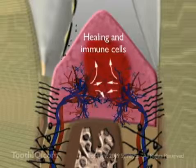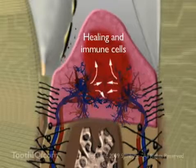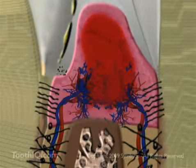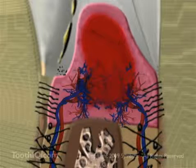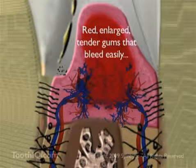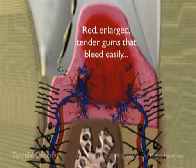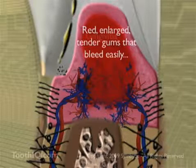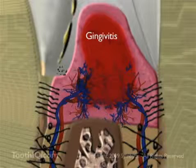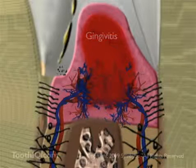In response to the increased bacteria adjacent to the soft gingiva, the body sends immune cells and healing cells to the area by way of the circulation. The increased blood flow to the gingiva produces red, enlarged, and tender gum tissues, a reversible condition known as gingivitis, in which the periodontal attachment fibers remain intact.